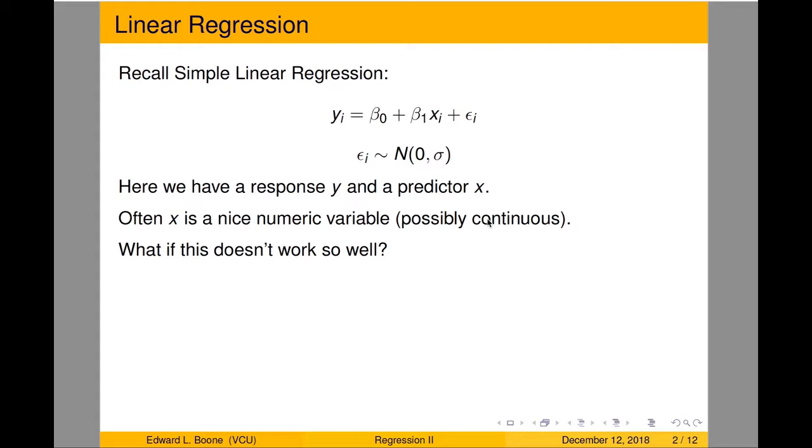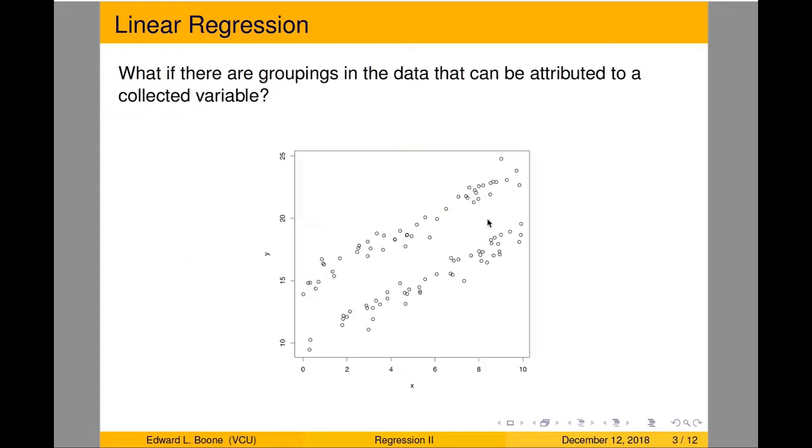Now, usually we get nice continuous or numeric variables and those are easy to work with, but what if this doesn't work so well? So let's look at this data. Here's some data. Is it linear regression data? Yeah, it looks like I have lines there versus line. So that looks like there's more than one and we need to be able to think about how could I model this, especially if these differences are attributed to a variable that I've collected. Like I know that one is one group and one is the other group.